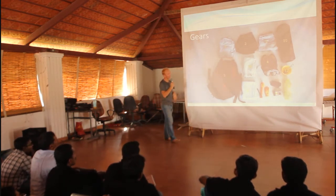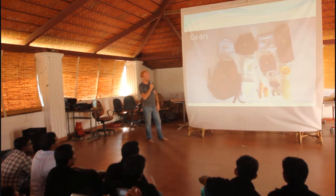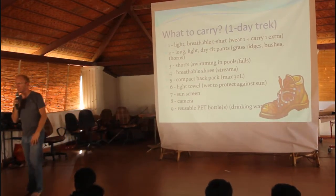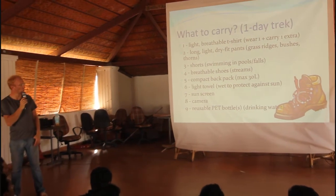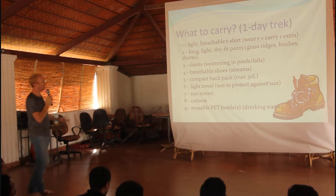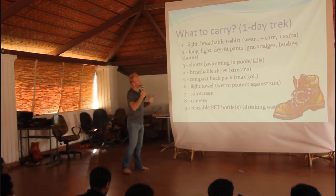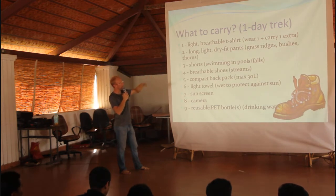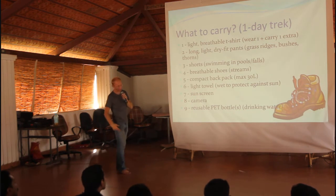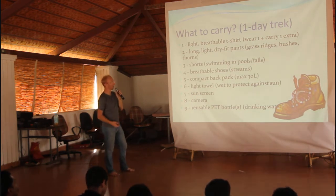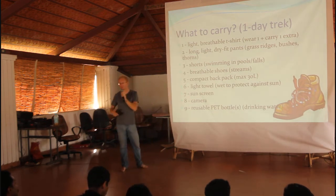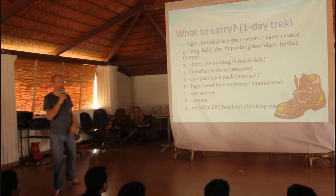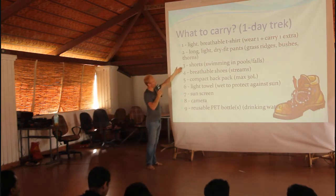I'm going to show you in the next couple of slides what things we carry. For a one-day trek, you don't have to set up a campsite, sleep in the jungle, or necessarily cook. Basic stuff - nothing different from the city. Some light, breathable clothing. You want ventilated clothing. You go along the streams, jump in the waterfalls, so carry one extra dress. Typically carry long pants at least to protect yourself from grass, bushes, and thorns. Always use dry-fit stuff because it dries quickly after you jump in the water. You don't want to carry jeans - that's one kilogram extra water that doesn't dry. You can also use shorts to jump into the water.